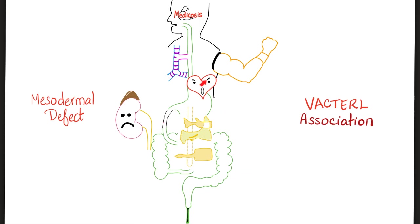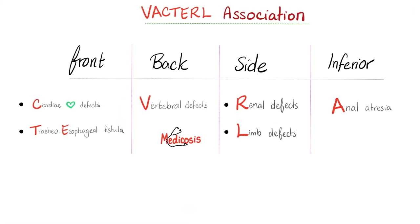Unlike your professor who doesn't teach you properly, let alone help you recall it later. Want another mnemonic? Sure. VACTERL Association — something in the front, something in the back, something on the side, and something below. Front: Heart and Tracheoesophageal Fistula. Back: Vertebral defects. Side: Kidney and Limb defects. Below — that's your sphincter — Anal Atresia. Front. Back. Side. Below. Now I can wake you up from a coma and you'll still recall the symptoms of the VACTERL Association.